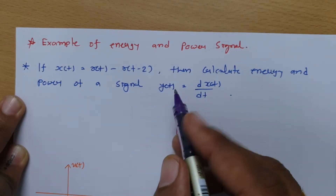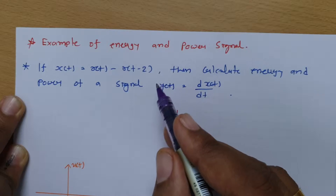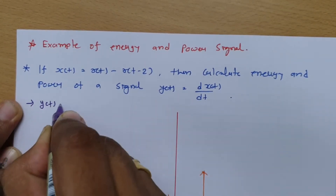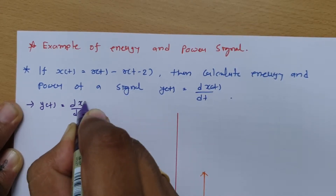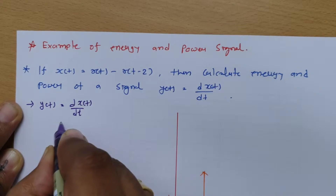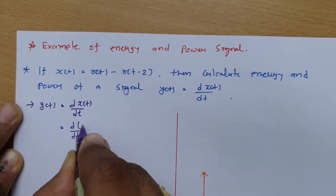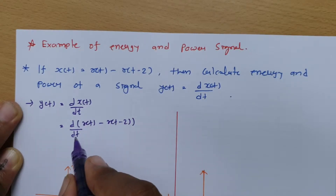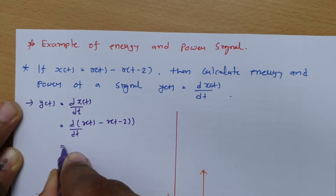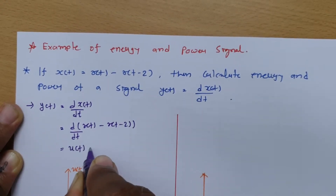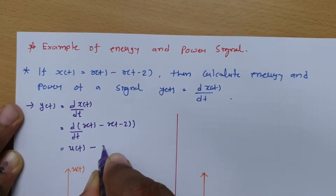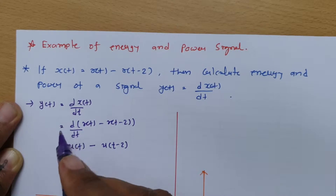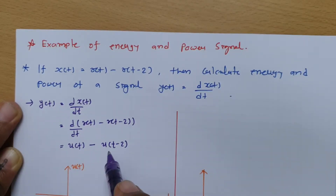We should not directly calculate energy and power. First, we need to differentiate X(t) with respect to time to obtain Y(t). Since X(t) = r(t) - r(t-2), and differentiating a ramp signal gives a step signal, r(t) becomes u(t) and r(t-2) becomes u(t-2). Therefore, Y(t) = u(t) - u(t-2).